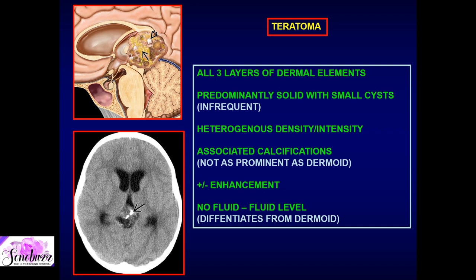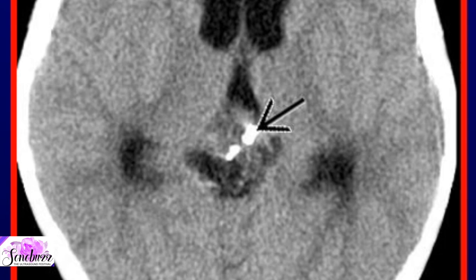The appearance on both CT and MRI shows a solid and cystic component with associated calcifications — not the chunky prominent calcification seen in dermoid, but calcifications are present. As with dermoid and epidermoid, teratomas tend to be centrally located. Frequent locations are the pineal region, suprasellar region, and CP angle region. A solid-cystic mass with calcifications in these areas suggests teratoma.